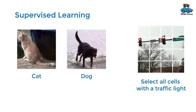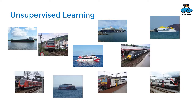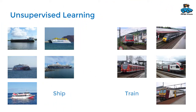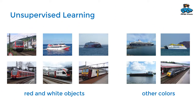For supervised learning you need data with labels, and one method of acquiring these labels are the CAPTCHAs that you sometimes see on the internet. Unsupervised learning means that you just have the data, but the machine learning algorithm has to figure out how they are related — it has to find patterns. You get different images, and maybe the algorithm classifies them as a ship or a train, or it might classify them according to their color, such as red and white objects versus objects with other colors. Unsupervised learning is great if you want to find patterns in your data.